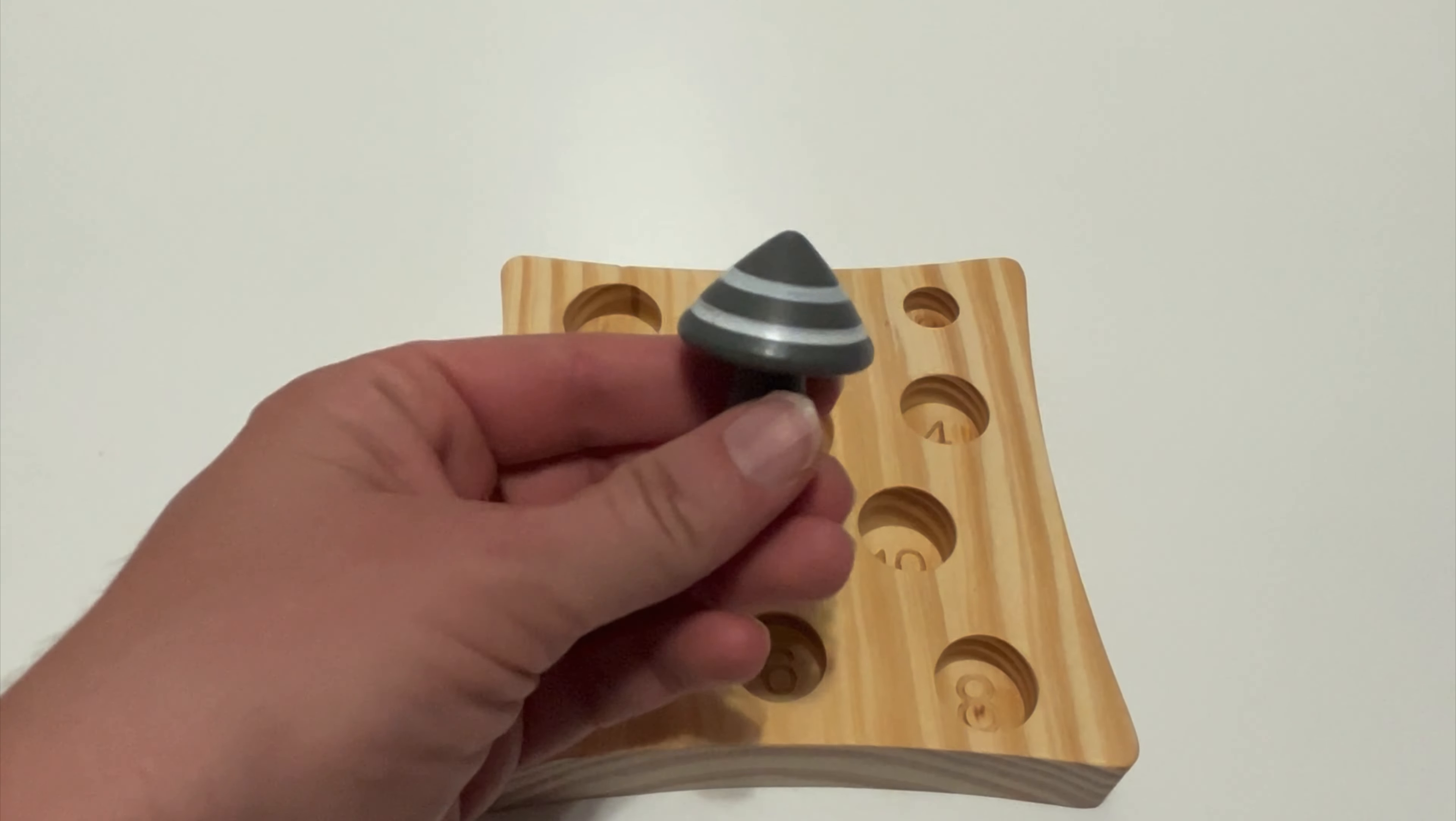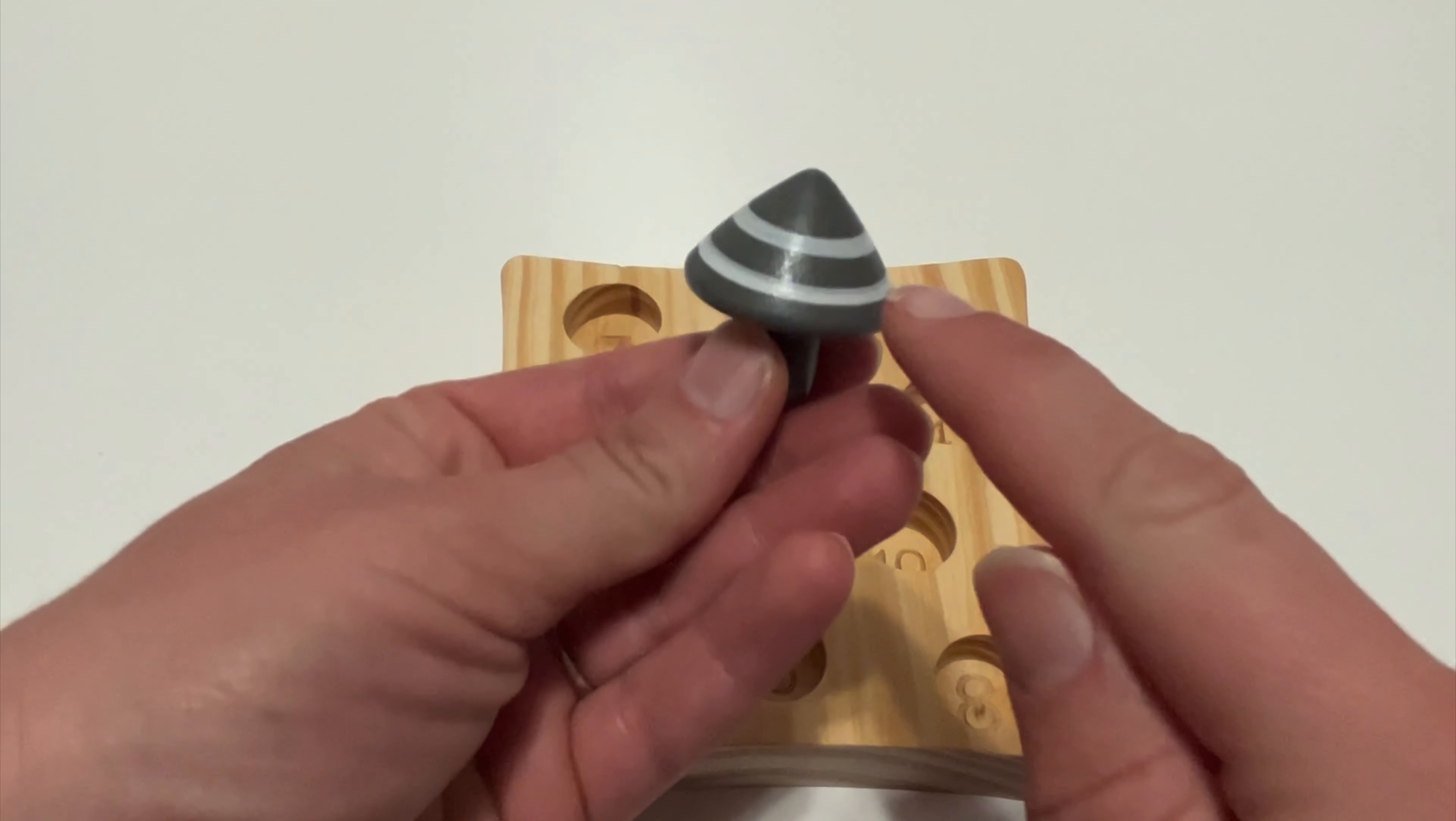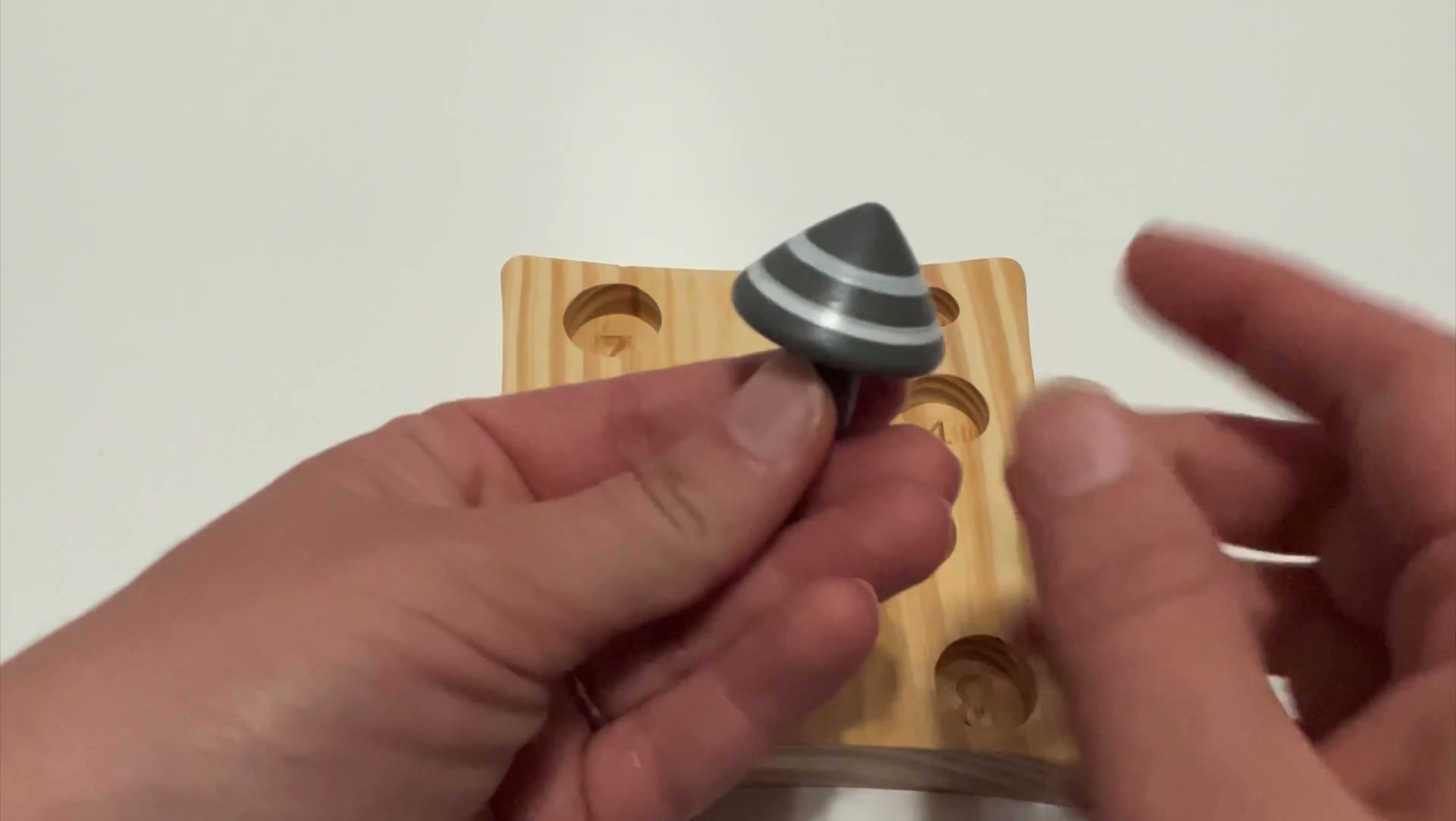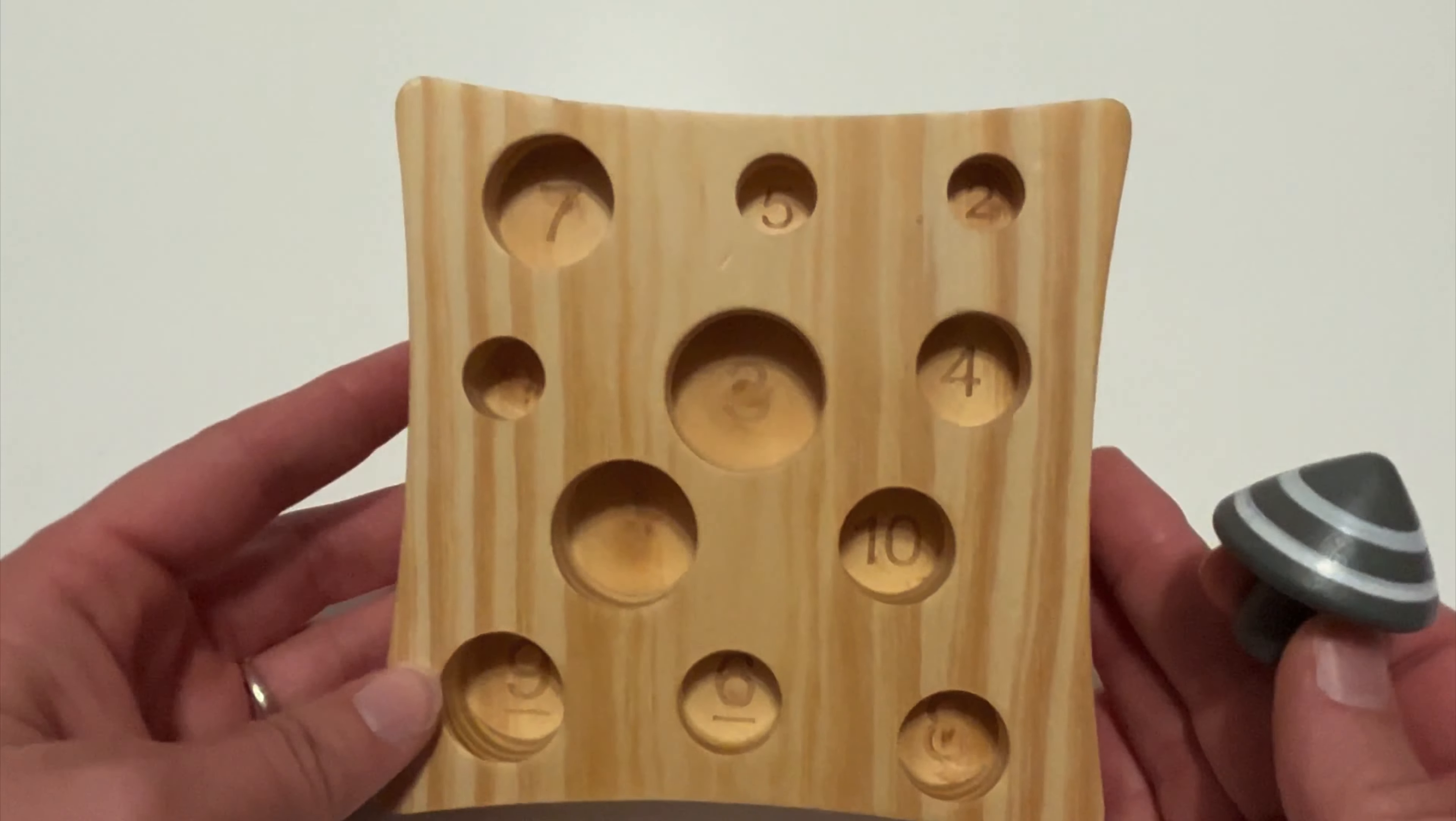Look at this mushroom here. How many special white stripes does it have? Let's count them. One, two. It has two. Can you find the number two? One, two.